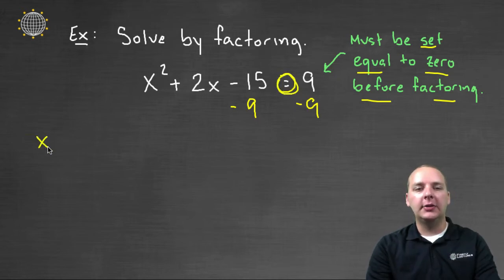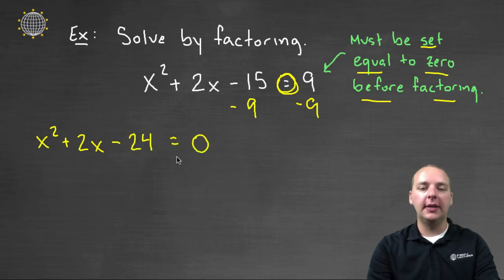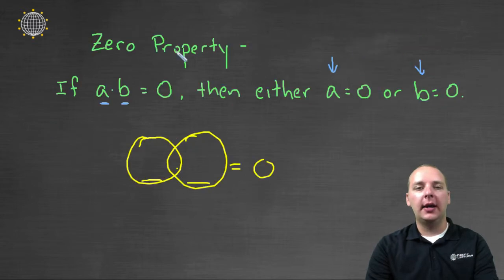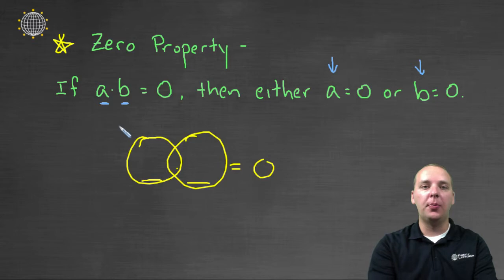And we'd have x squared, plus 2x, minus 15 minus 9 would make minus 24, equal to zero now. Great! Now that that's equal to zero, I can now use this super important property called the zero property,